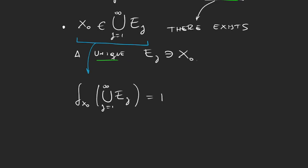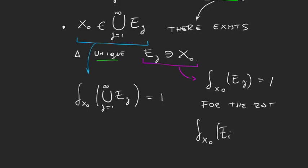But now there is only one E sub j that has x₀. So, well, for this E sub j, we will have that the delta of E sub j for this one is 1 also because it has the element x₀. And for the rest, I'm just going to change the index so we know it's a different j, the delta of E sub i has to be 0 for i different from j.